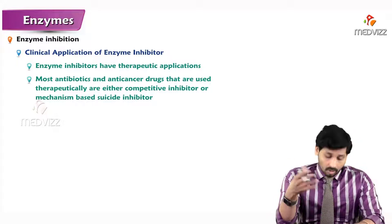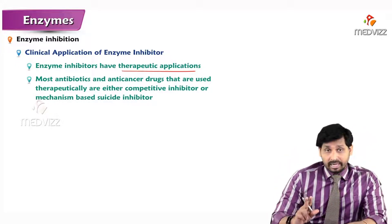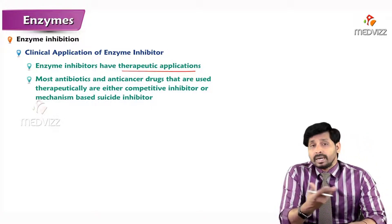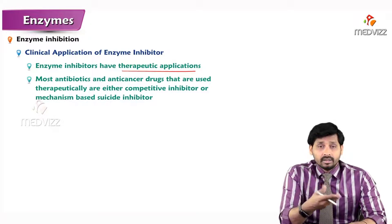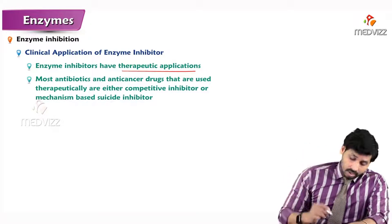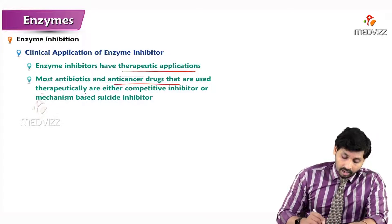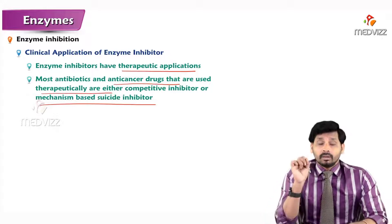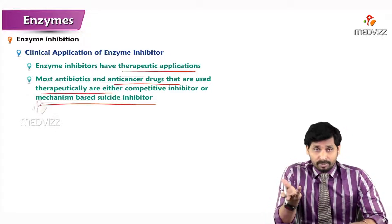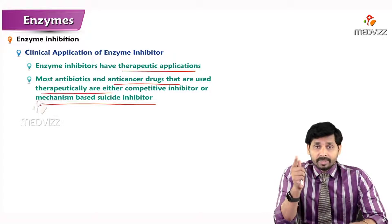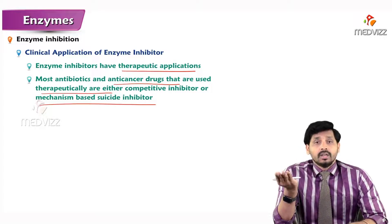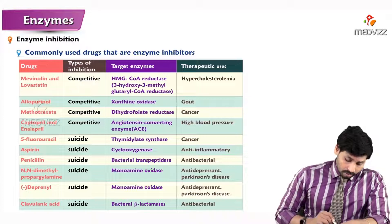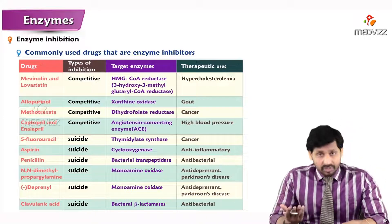Clinical applications of enzyme inhibitions: enzyme inhibitors have major therapeutic uses. Most antibiotics like penicillin treat bacterial infections. Most antibiotics and anti-cancer drugs used therapeutically are either competitive inhibitors or mechanism-based suicide inhibitors. These are the two main categories used in treatment.